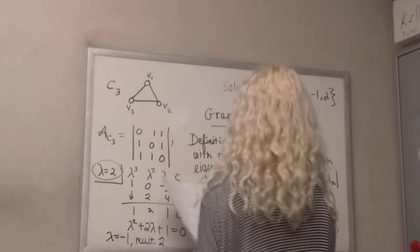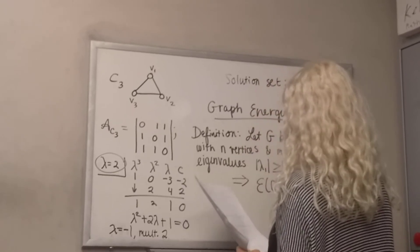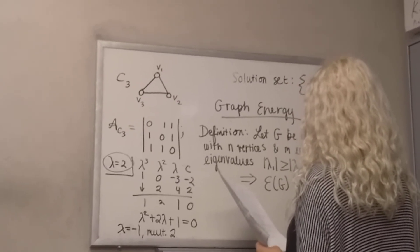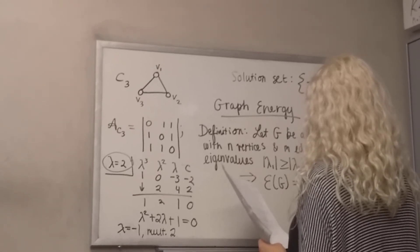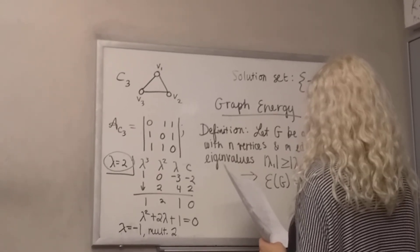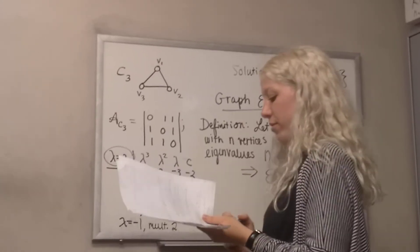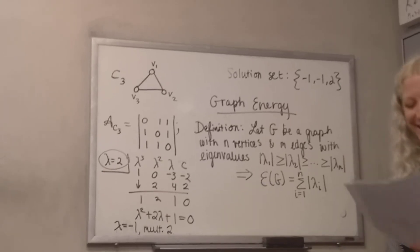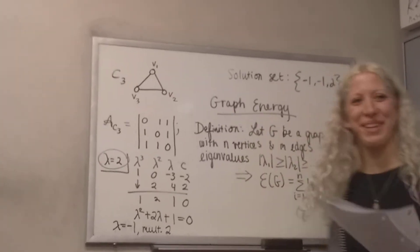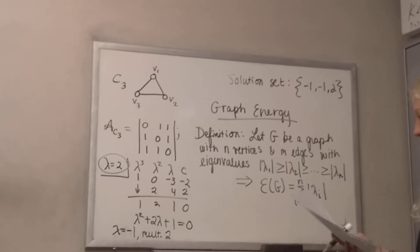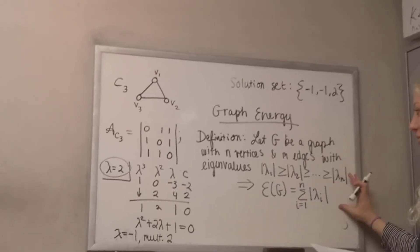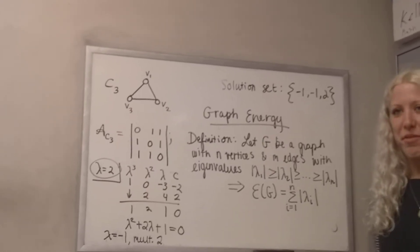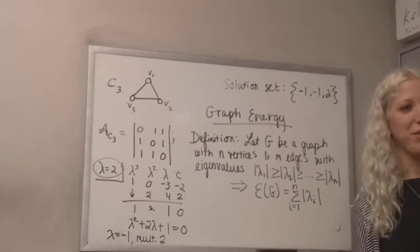So this implies that the energy of the graph — it doesn't have to be complex. It's more often the case that eigenvalues are complex, but obviously you've got to do the simple case first. So that's the definition of graph energy: it's the sum of the absolute value of all the eigenvalues of the graph.